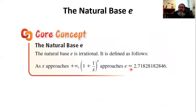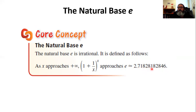Sometimes people notice 2.7 followed by 18281828 and think it's repeating — but it doesn't repeat after that; then it's 4, 6, and keeps changing. However, it makes E easy to remember: you get 2.7, then 18281828 — that's nine decimal places without much memorization. So 2.71828 1828 is a pretty accurate approximation you can use if you ever need to punch it into a simpler calculator.